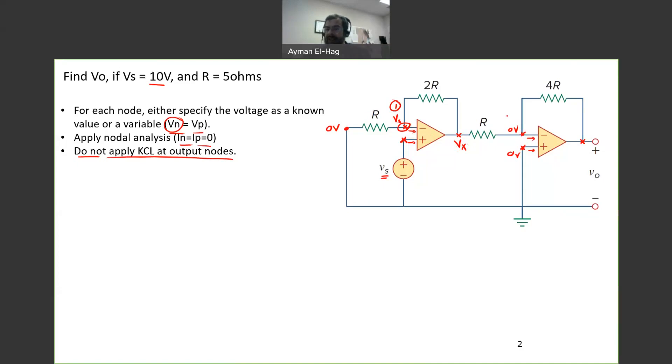Then this, yes, this is our second node. This is a node, but this is connected to the output of the second op-amp. So also I don't apply KCL to it. So basically I have two nodes that I can apply KCL to them. So now we are set. We did everything we need before we start solving the problem.